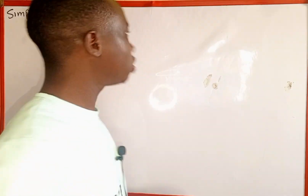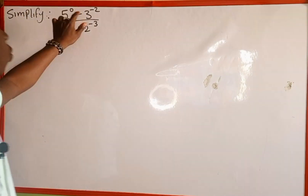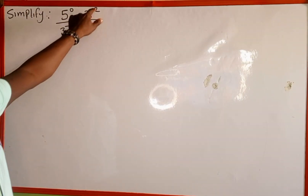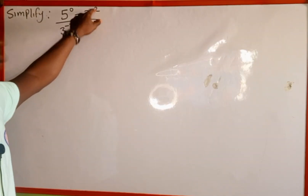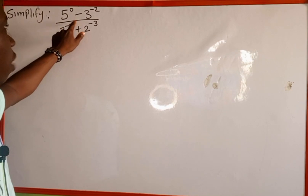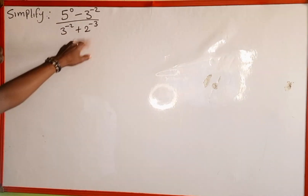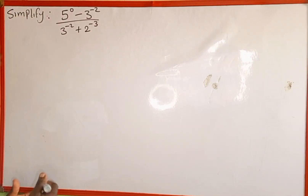The given expression is: 5 to the power of 0, minus 3 to the power of negative 2, divided by 3 to the power of negative 2 plus 2 to the power of negative 3.